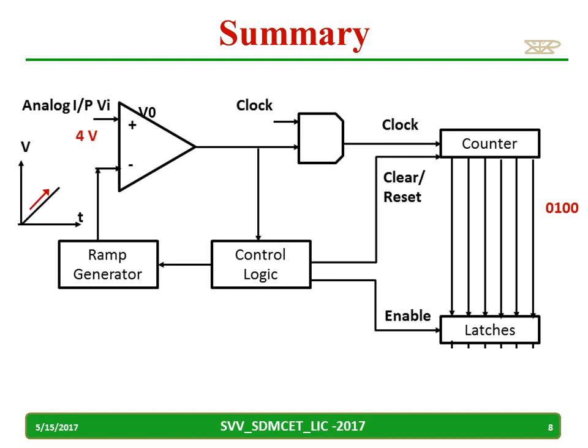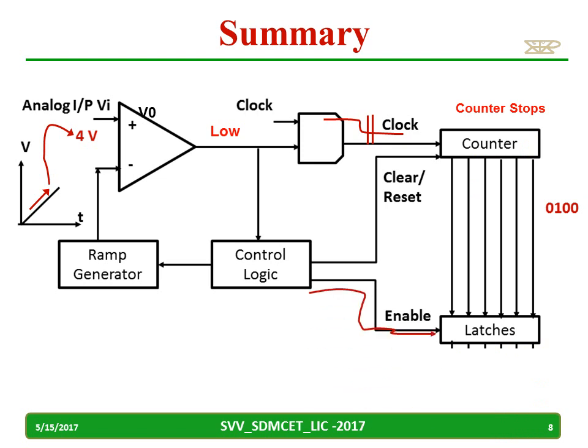In summary: the ramp generator voltage is increasing while the counter is counting in parallel. After some time, when the ramp voltage V becomes more than 4 volts, the output of the comparator becomes low and the clock will not reach the counter. The counter stops counting, and the control logic sends an enable signal to the latch. Then it sends a reset or clear signal to the counter.